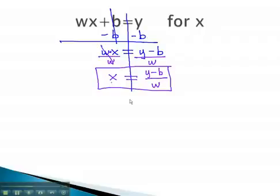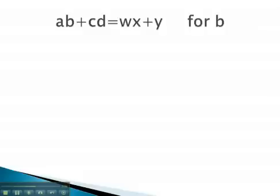Again, notice the variable we wanted, x, is all alone on one side. Let's try another equation. In this next example, you notice that the variable we're solving for is b.